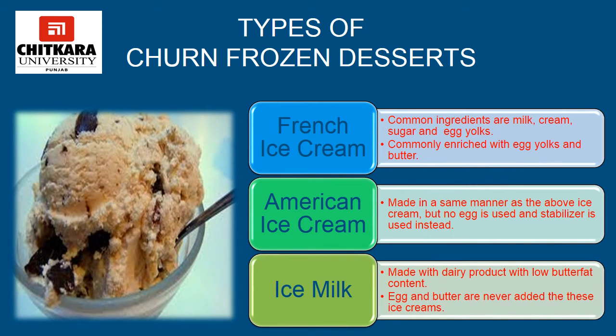Let's discuss the types of churned frozen desserts. The first is French ice cream, also known as frozen custard. This type is commonly enriched with egg yolks and butter. Full cream milk is combined with dairy cream and sugar and cooked with whipped egg yolks until a thick sauce forms. Thereafter, flavors and stabilizers are added and the mixture is cooled in the refrigerator for at least 24 hours before churning. The second is American ice cream, made in the same manner as French ice cream but with no egg — a stabilizer is used instead.